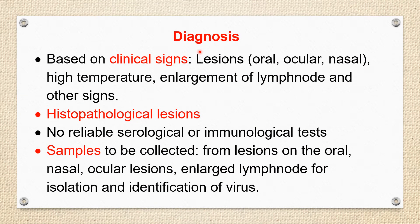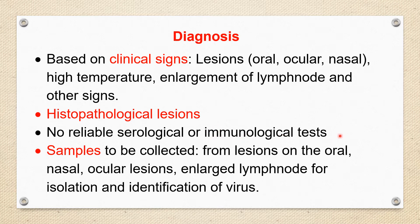We see here the Diagnosis part. Diagnosis is based mostly on clinical signs. We have already seen that there are lesions in the buccal cavity, in the eyes, in the nose, accompanied with high temperature and characteristic finding — enlargement of lymph nodes — along with other signs to provide diagnosis of MCF. Histopathological findings help in further confirmation. For this disease, there is no reliable serological or immunological test, so we have to purely depend on clinical signs.